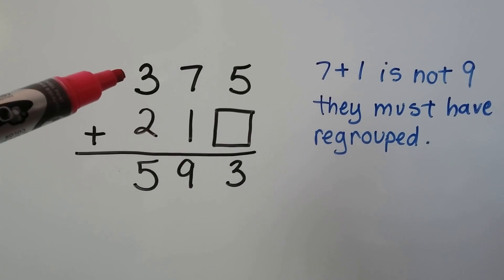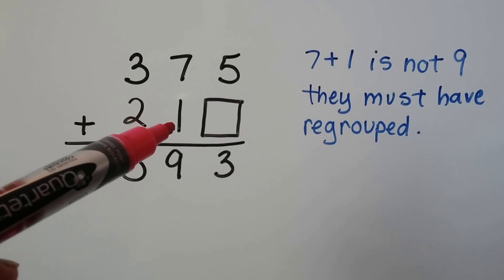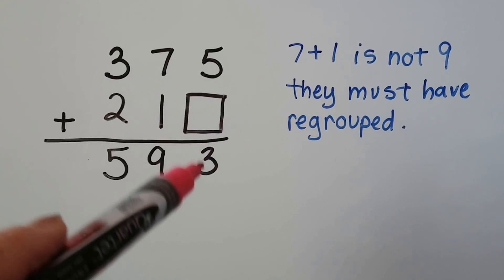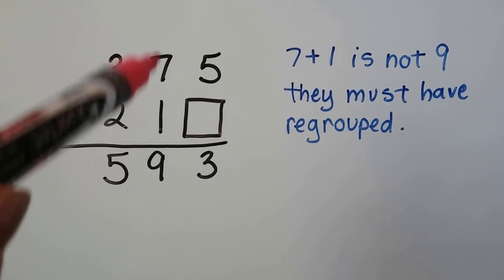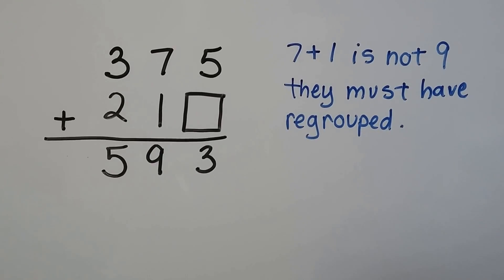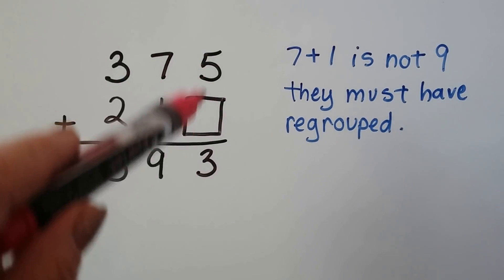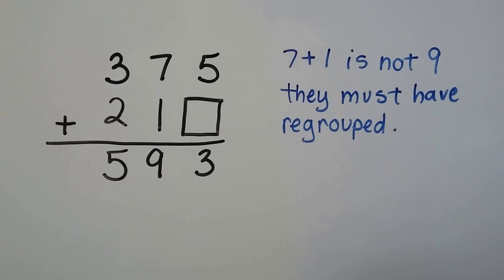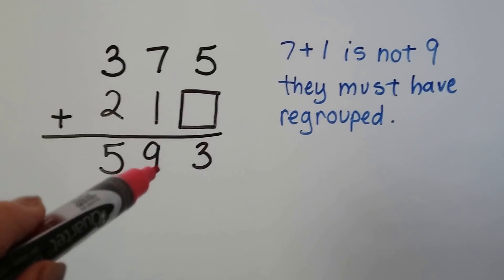We have 375, and we're adding 210 and some 1s. And it says 5 plus something is a 3. And 7 plus something is a 9. Well, that doesn't make sense. 7 plus 1 is a 9. And what could we add to 5 to make a 3? Well, that doesn't make sense.